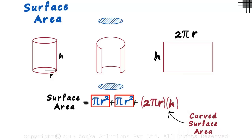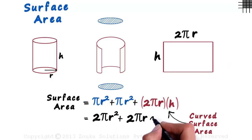Adding these like terms, we get 2πr² and we write 2πrh as is. 2πr is common to both the terms. So we write the final formula as 2πr multiplied by (r + h).